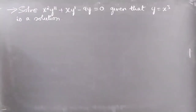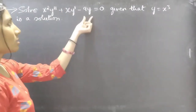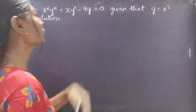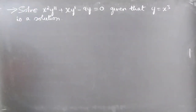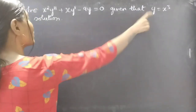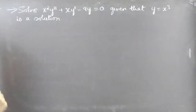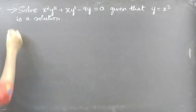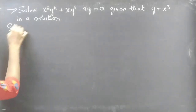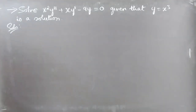Problem: Solve x² y'' + x y' − 9y = 0, given that y = x³ is a solution. So we are given y = x³ is a solution of the given problem. We need to find the general solution, but since y = x³ is already given, it is not necessary to find the complementary function part using the inspection method.